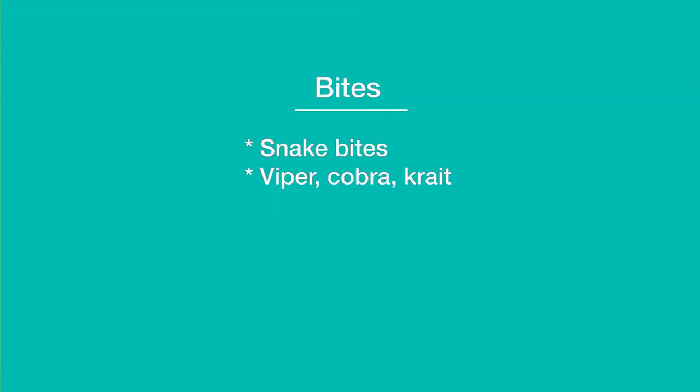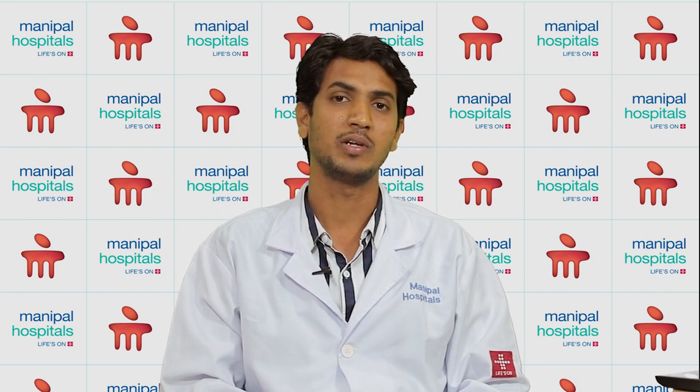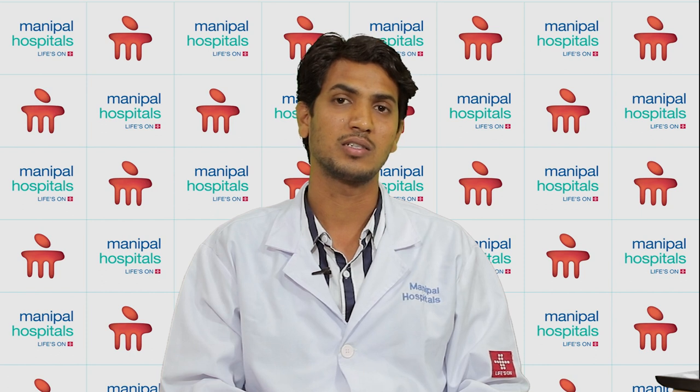Animal bites also increase during rainy seasons, mainly snake bites, which are more commonly seen in rural areas. The risk associated with cobra snake bites is neurological weakness, while other snakes such as the krait or viper can cause bleeding tendencies.